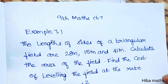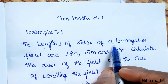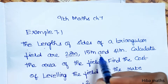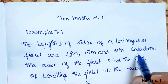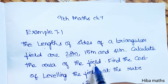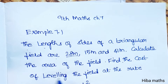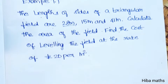Hello students, welcome to Hibamax 9th Standard Max Chapter 7 Example 7.1. The length of sides of a triangular field are 28 meter, 15 meter, 41 meter. Calculate the area of the field. Find the cost of leveling the field at the rate of rupees 20 per meter square.